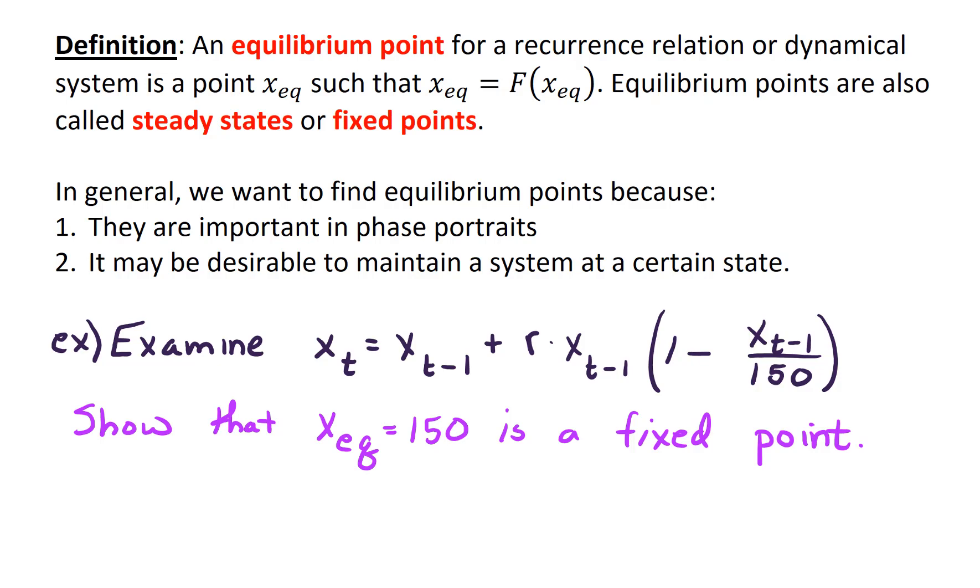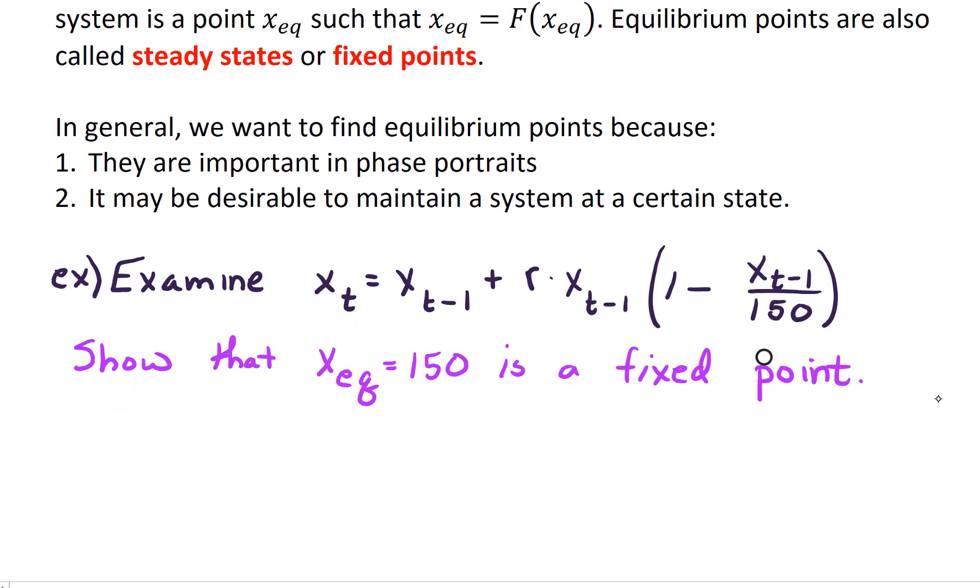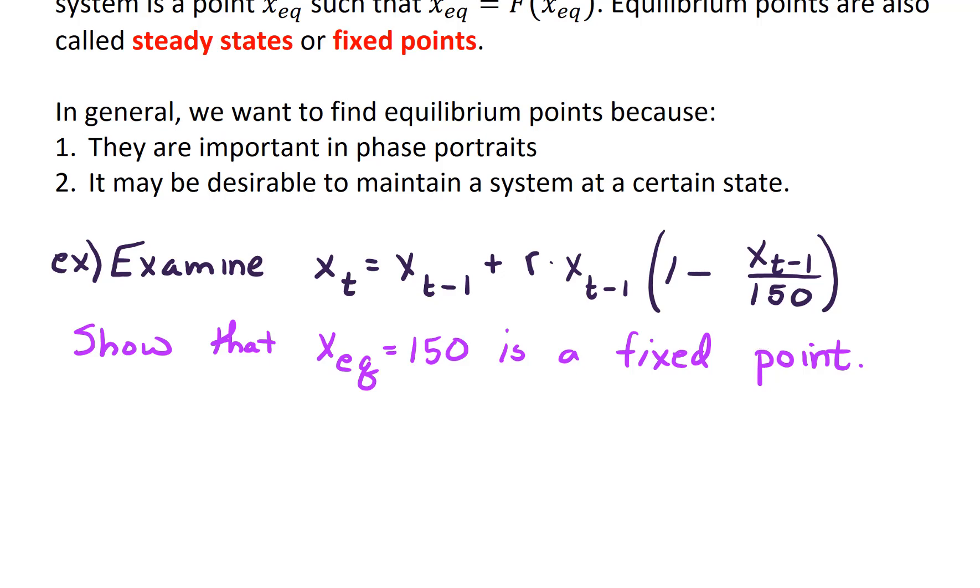The first example, I want to look at a discrete time model. This is a logistic growth model and the carrying capacity is already set at 150. Now I want to show that x sub eq is 150 is a fixed point. So what I want to show is that when x sub t minus 1 equals 150, this produces an output of x sub t equals 150.